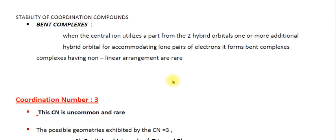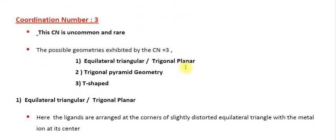The second geometry for coordination number 2 is the bent complex. Here, the central metal ion uses two hybrid orbitals, plus one or more additional hybrid orbitals for accommodating lone pairs of electrons, forming a bent complex. The non-linear arrangement with coordination number 2 is rare. Out of these two, the linear complex is basically more common.